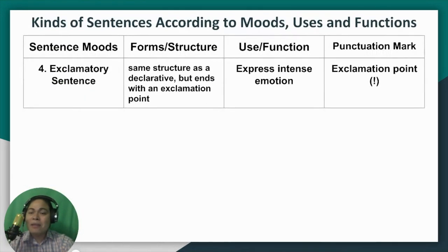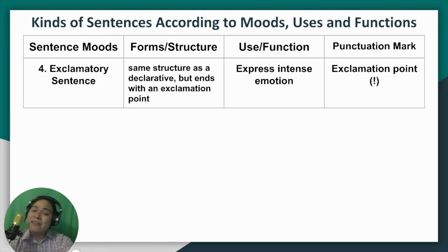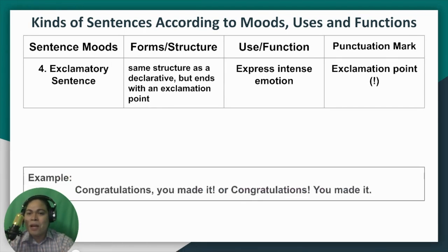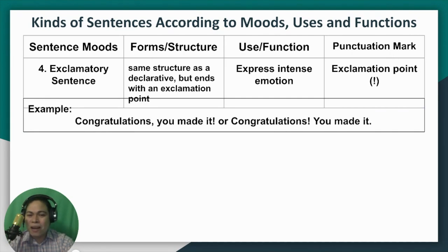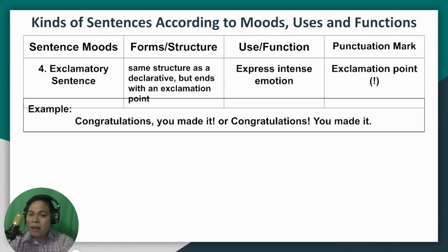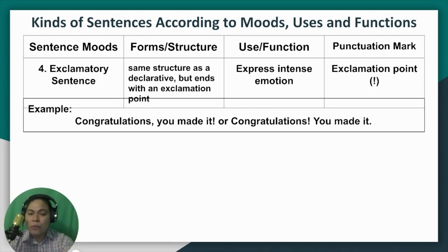Number four is exclamatory sentence. It states an intense feeling or emotion. It is similar to declarative sentence but ends with an exclamation point since it expresses intense emotion or feeling. The punctuation mark to use is an exclamation point. There are two ways to write exclamatory sentences: the first is your exclaiming word, separated by a comma, then your sentence, then an exclamation point. The second is the exclaiming word with an exclamation point, then your sentence, then a period.